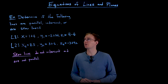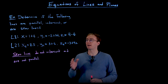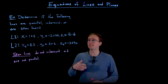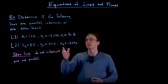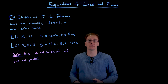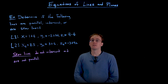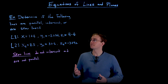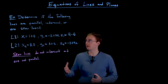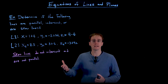In this example we want to determine if the following lines are parallel lines, intersecting lines, or skew lines. And if they're intersecting lines, we want to find that point of intersection. So how do we go about determining which case we have?